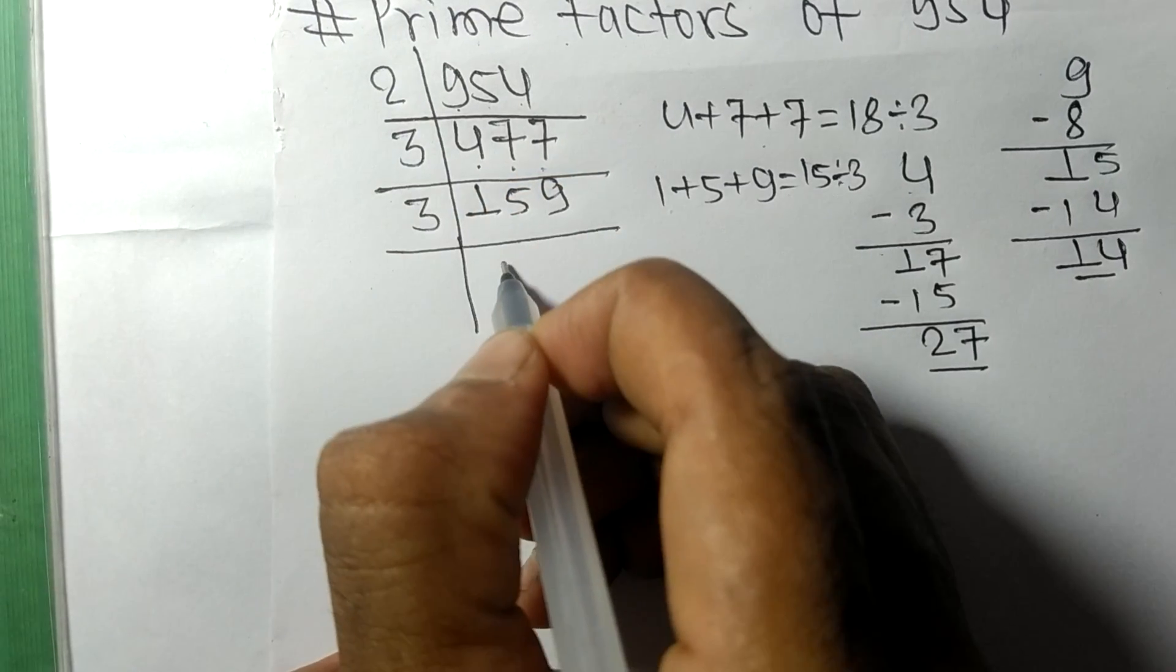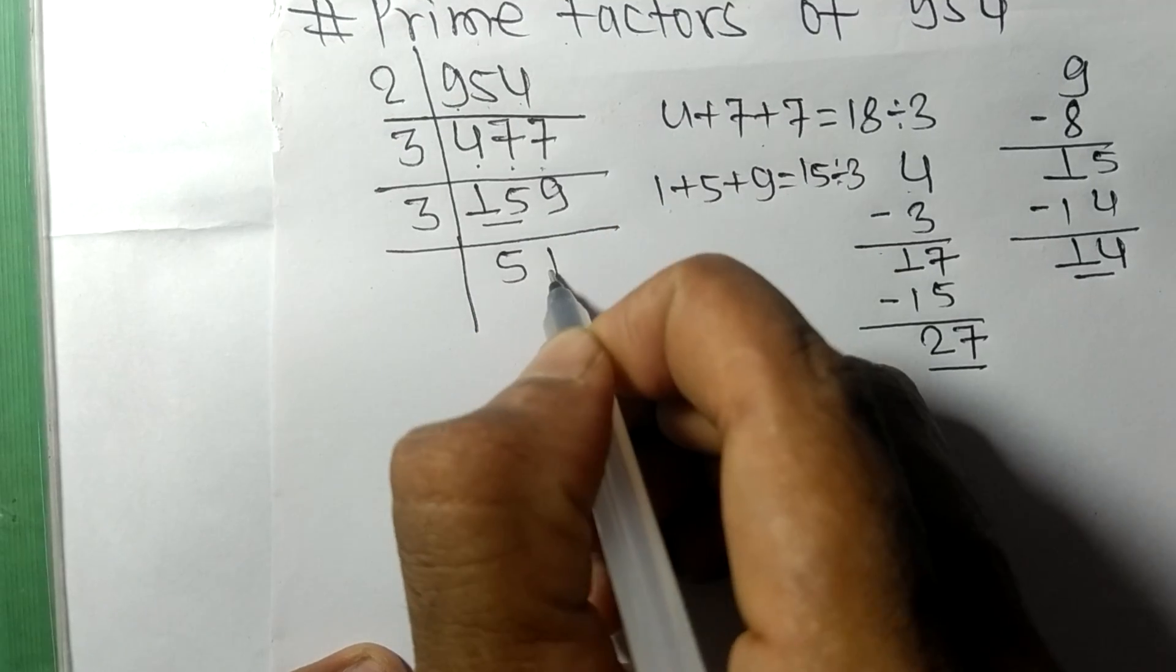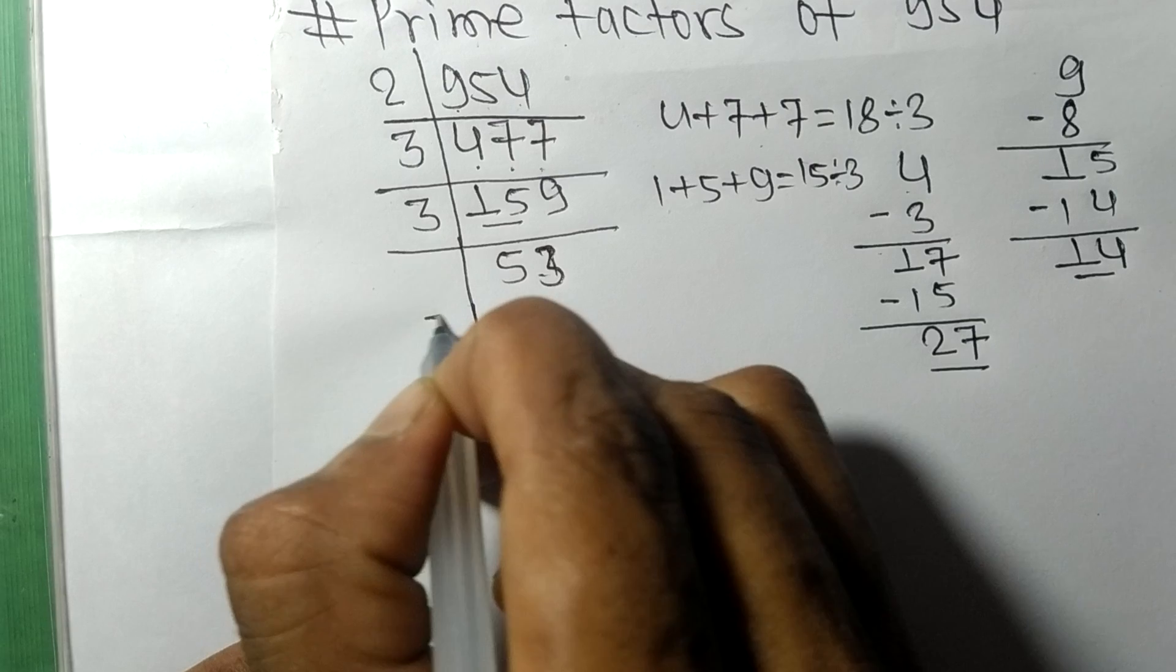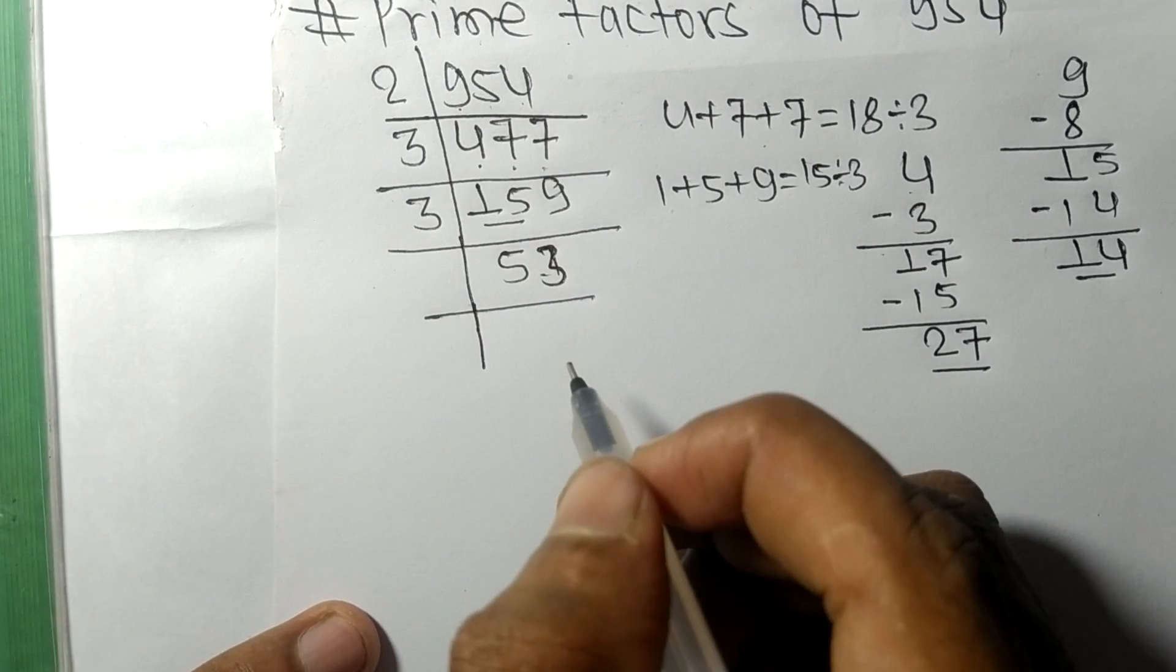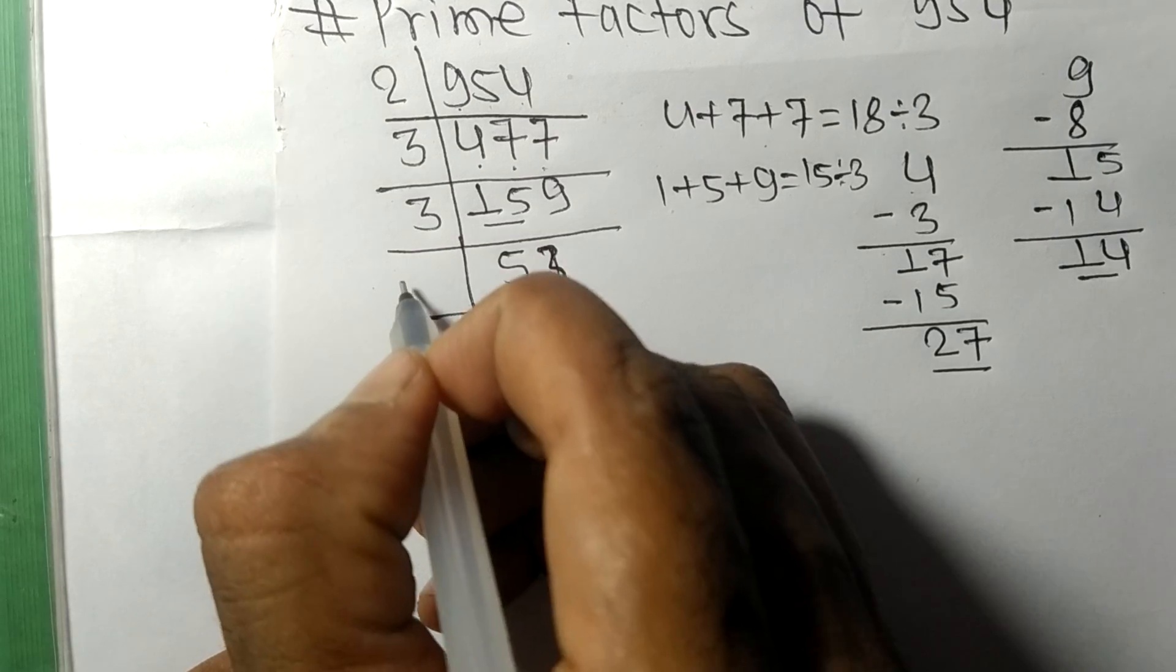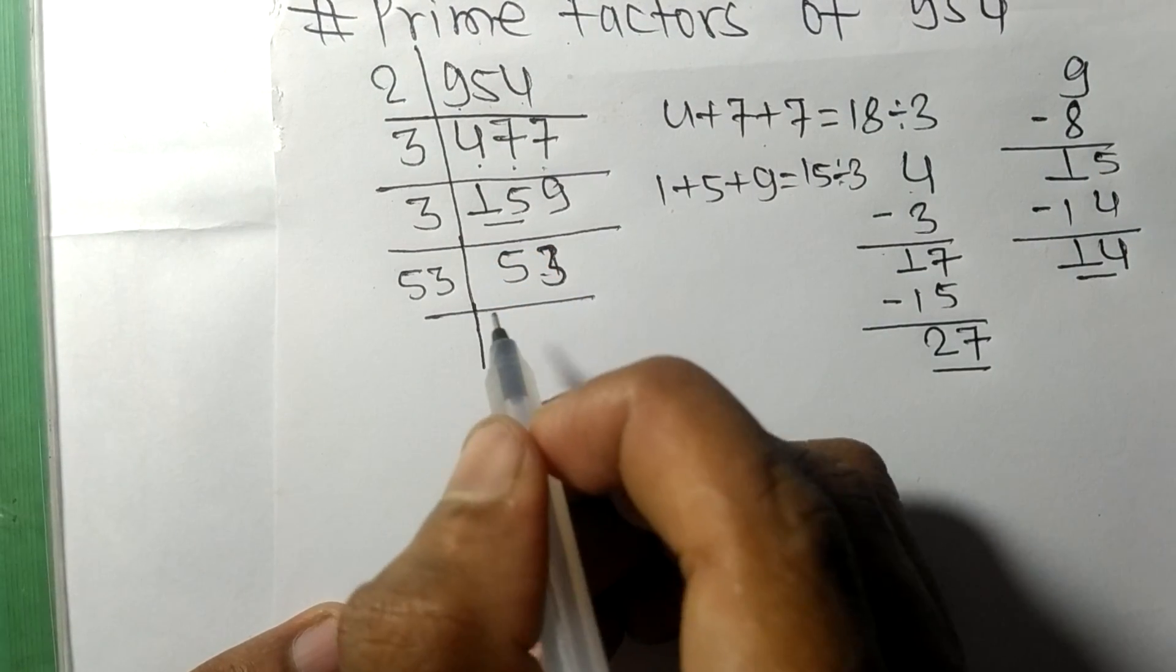3 times 5 means 15. 3 times 3 means 9. So now we got 53 which is a prime number, so it is exactly divisible by 53 only. On dividing we get 1.